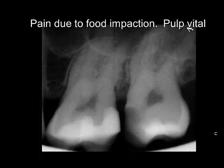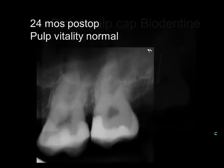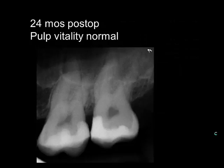For this pulp cap where we had a caries exposure and the tooth was vital, had no problems, and was normal to percussion and palpation, we did a direct pulp cap with Biodentin. Two years later, the pulp cap is successful — we see normal pulp vitality, the tooth has been restored with composite, and the pulp chamber and root canal are the same size as when we did the original pulp cap.